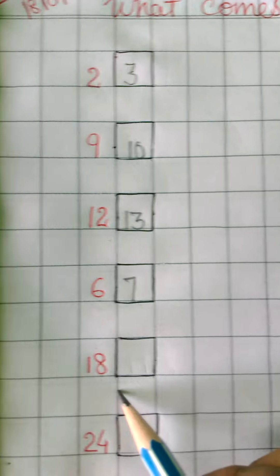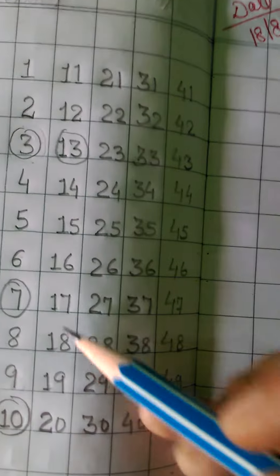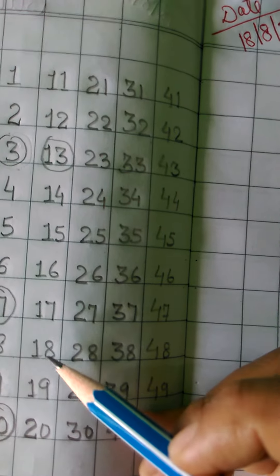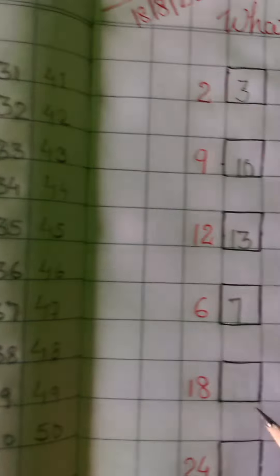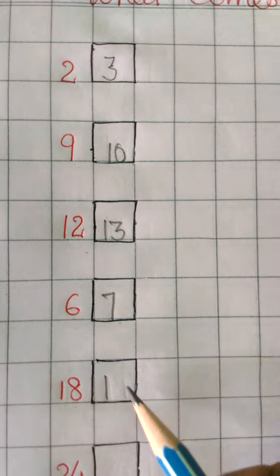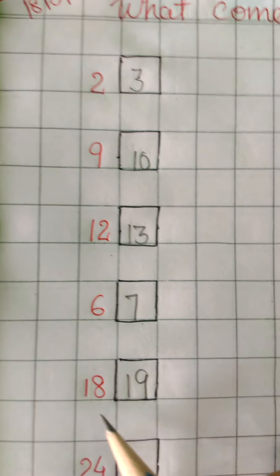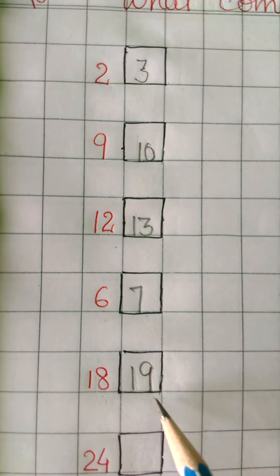Next is 18. Again we will check in the counting numbers. What comes after 18? 19. So in the box we have to write 19. 19 comes after 18.